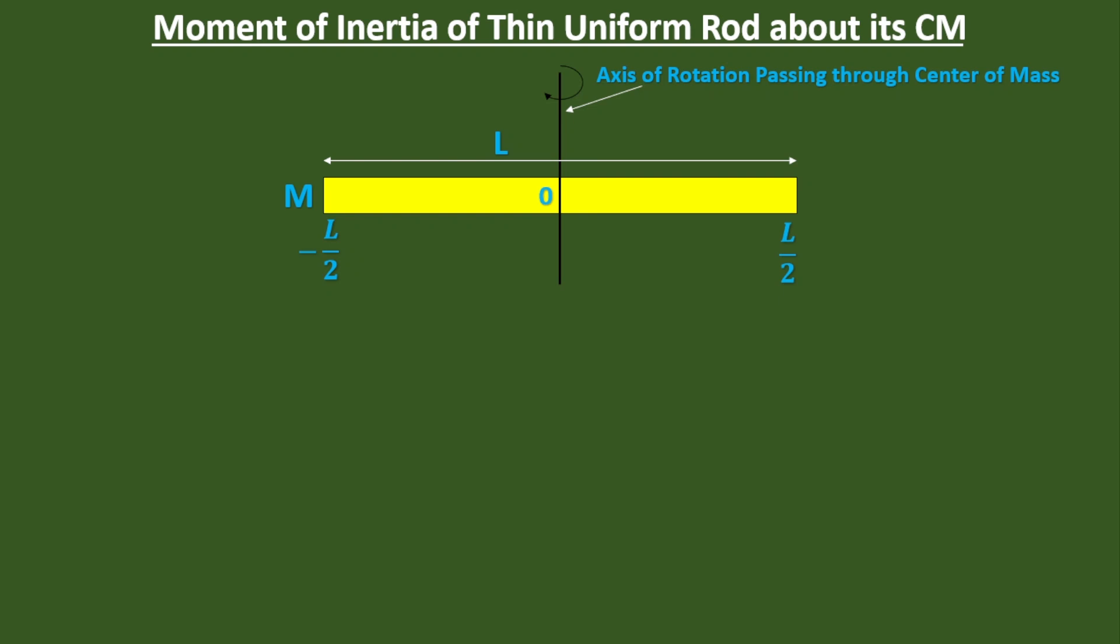Then let us consider an elementary length, that is a small thickness of the uniform rod as dx, and it must be dm, that is small mass of dx, and it is at a distance x from that axis of rotation or origin.